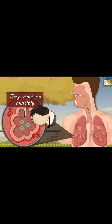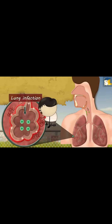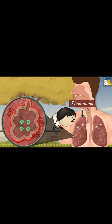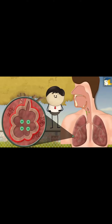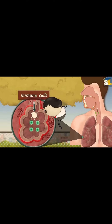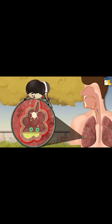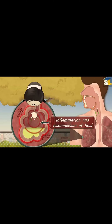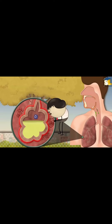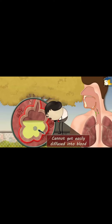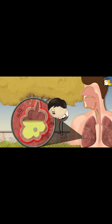There, they start to multiply, causing lung infection — that is pneumonia. Oh no, now what do we do? Now, to protect ourselves, the immune cells start attacking the microorganisms, causing inflammation and accumulation of fluid in the alveoli. As a result, the inhaled oxygen cannot get easily diffused into blood, thus causing difficulty in breathing.